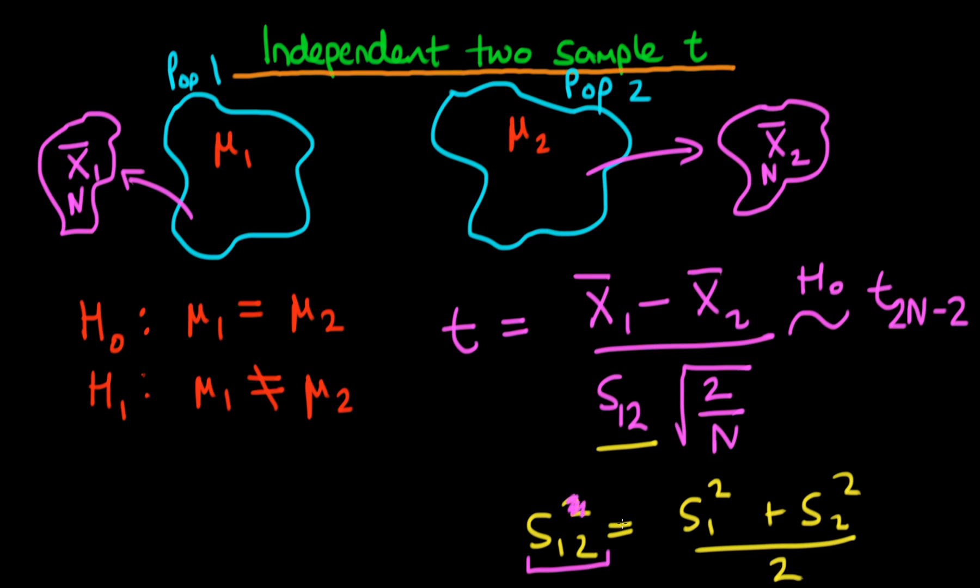So S1,2, not all squared, but just S1,2 on its own, is just obviously just the square root of those two things. And although it's still not exactly analogous to an average, you can still sort of think about it in that sense. Essentially, it's a sort of grand standard deviation across the two samples.